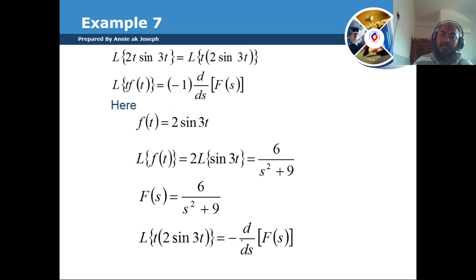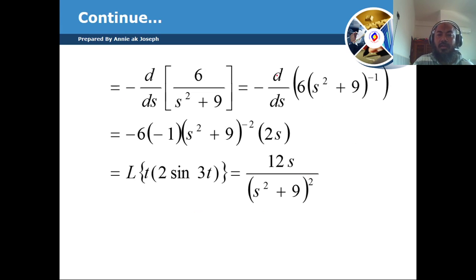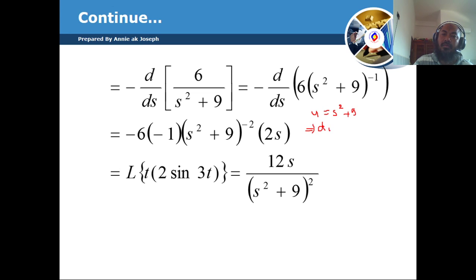Since this is t to the power 1, we apply minus 1 to the power 1, so it becomes minus the first derivative with respect to s of F(s), where F(s) = 6 divided by s squared plus 9. So we need to find the derivative of this. To do this, let u equal to s squared plus 9.